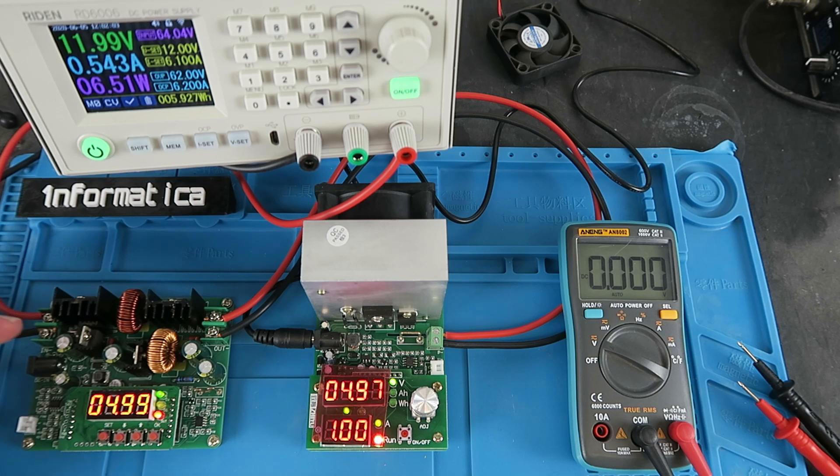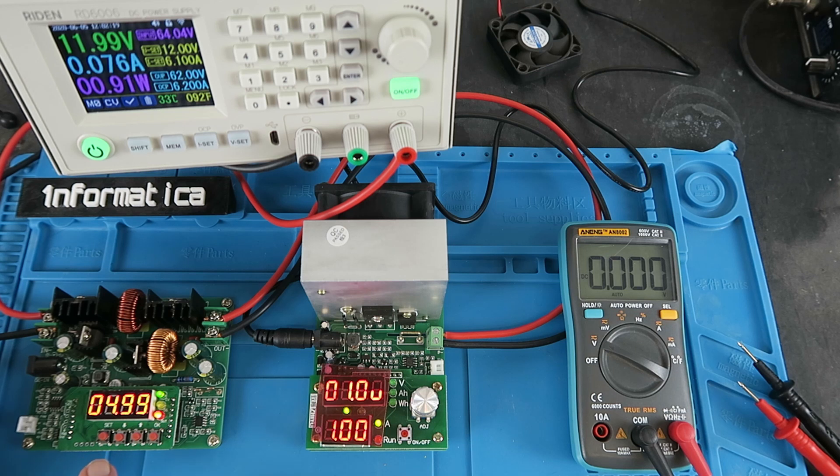As the input is 12 volts and the output is 5, clearly it's in its buck or step down mode. Let's now stop the load a moment and change the voltage here. Let's make it, say, 24 volts.